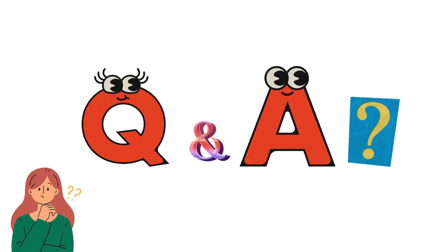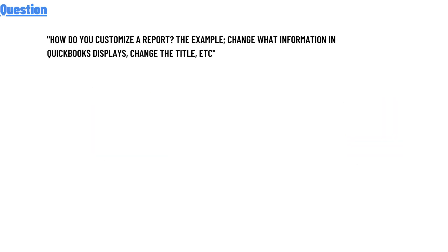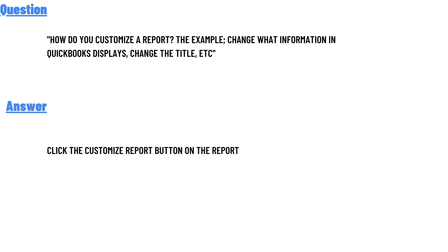Today's question is: how do you customize a report — for example, change what information is displayed in Kubus, change the report title, etc.? The correct answer is: click the 'Customize Reports' button on the report.